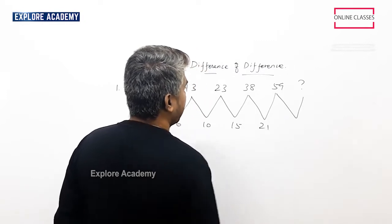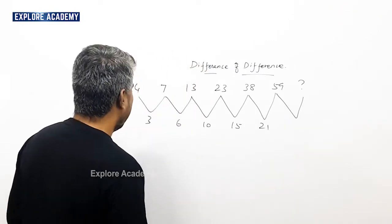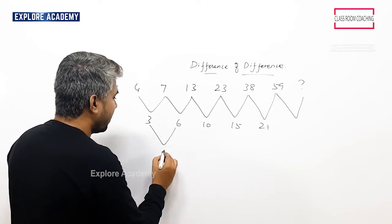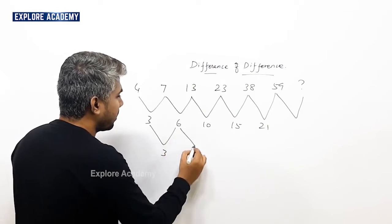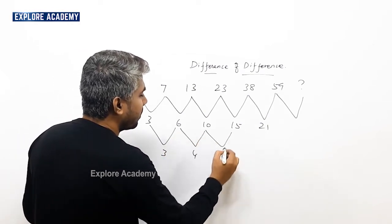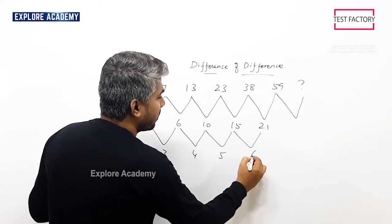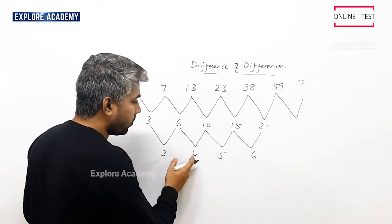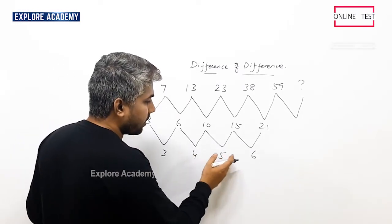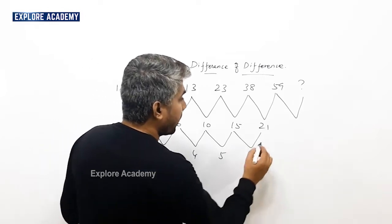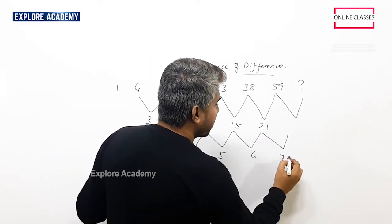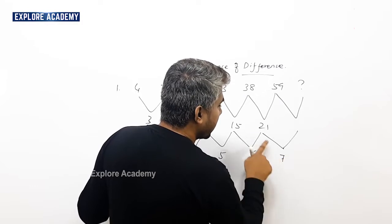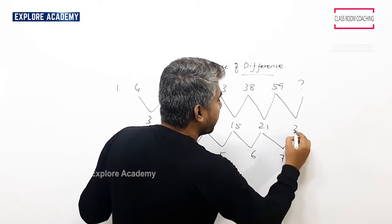First time the difference is 3, 4, 5, 6, and the next difference is 7. So what is the difference? 7. It's 21 plus 7 is 28.